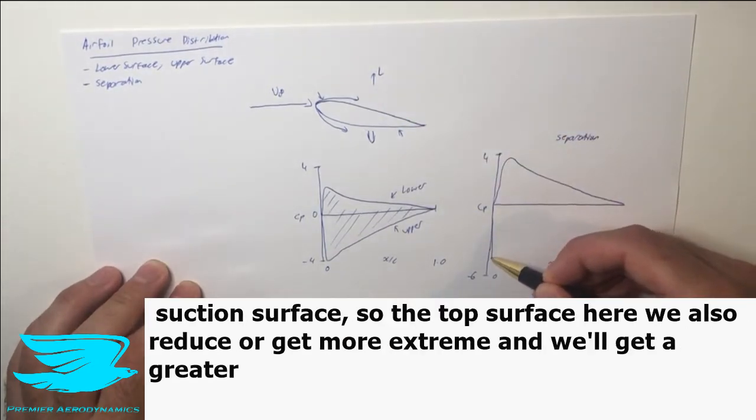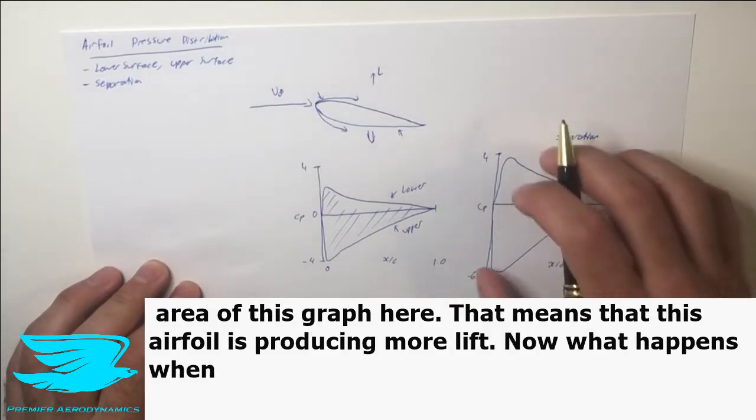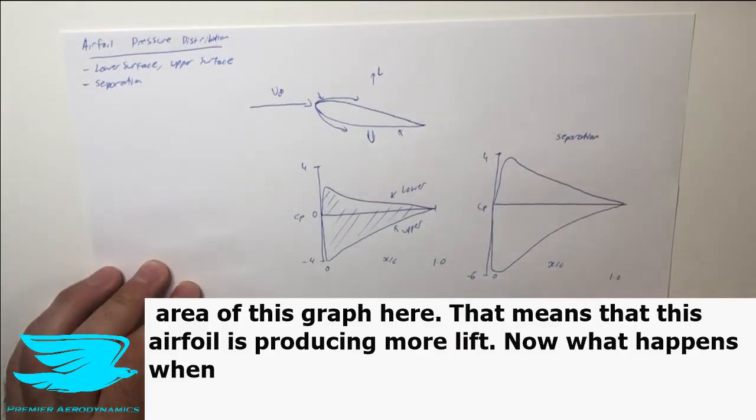The suction surface, so the top surface here, will also reduce or get more extreme. We'll get a greater area of this graph here, which means that this airfoil is producing more lift.